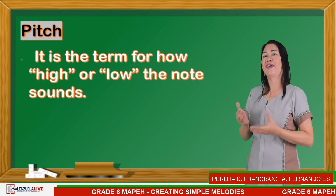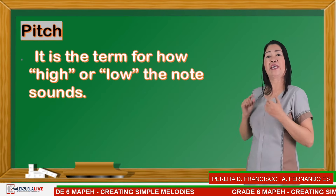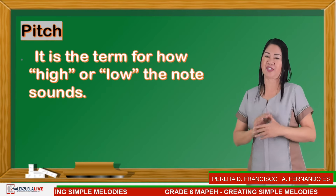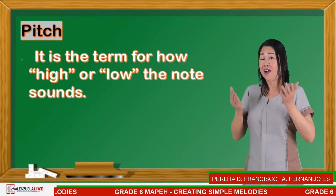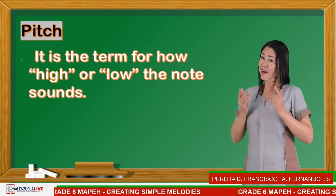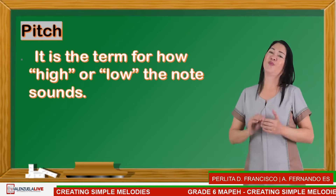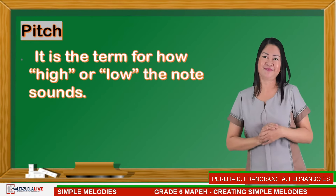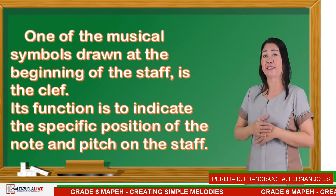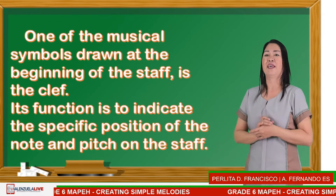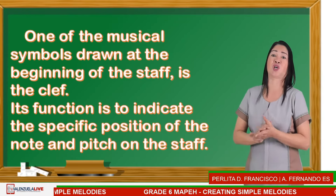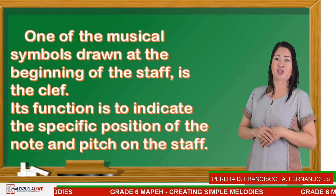Next is pitch — it is the term for how high or low the note sounds. For example: high, low. One of the musical symbols drawn at the beginning of the staff is the clef. Its function is to indicate the specific position of the note and pitch on the staff. There are two most commonly used clefs.